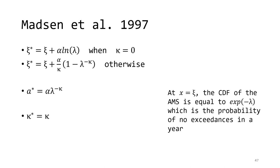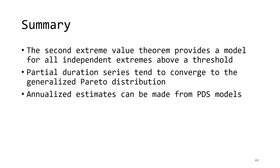There is a more direct way to go between the PDS GPA model and an AMS GEV model that bypasses the adjustment. It requires fitting the PDS model, getting the mean rate of events, and then converting the parameters from the GPA to the equivalent GEV AMS model. Here, c, alpha, and kappa are the parameters of the PDS GPA model, and lambda is the mean rate of events for the partial duration sample. The same symbols with a star are for the AMS GEV distribution. It's easy to convert between the two, especially because of the way these distribution functions were formulated, resulting in the kappa parameter being equal for both.